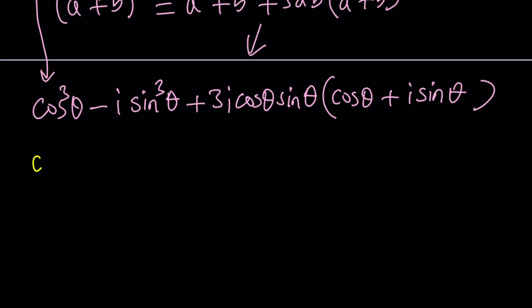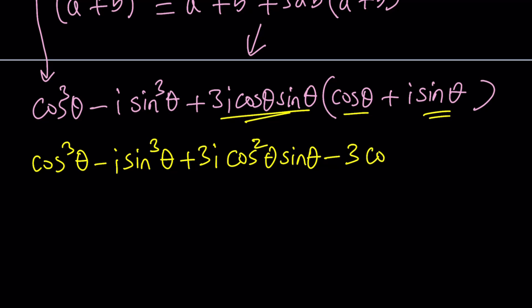First of all I can go ahead and use distributive property here. Let's go ahead and multiply these two things first. When I multiply them I'm getting 3I cosine squared theta sine theta. What is next? I'm going to multiply these two now. And when I do 3I squared gives me negative 3. And then cosine sine times sine is going to give me cosine times sine squared.